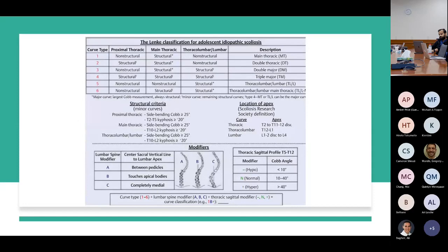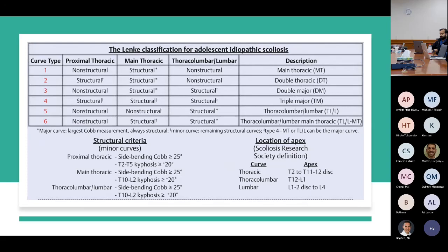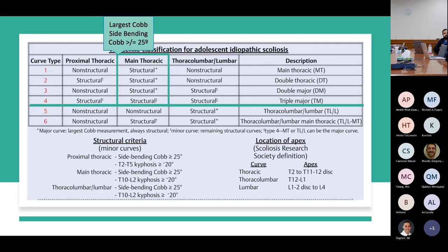The Lenke classification has six main curve types. An easy way to divide these: the first four types are main thoracic curves, where the structural curve is the main curve, and types five and six are thoracolumbar curves. The main curve is defined as the largest curve with the largest Cobb angle that does not bend out on lateral bending films. The main structural curves can also be in the thoracolumbar and lumbar spine.